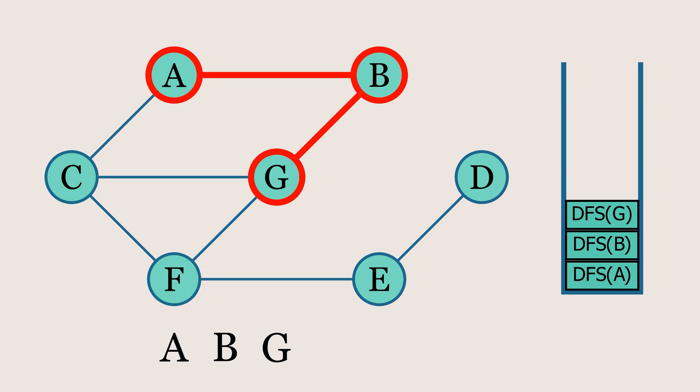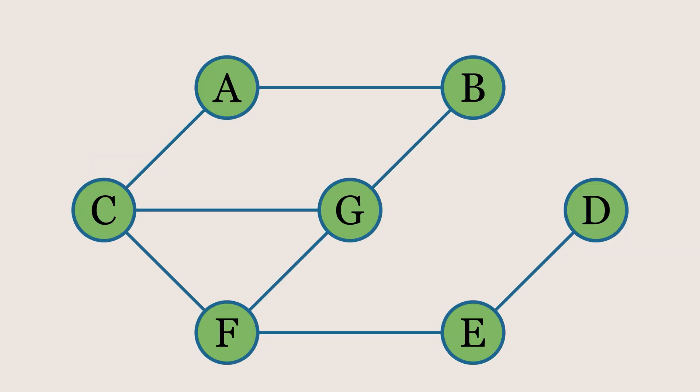Unlike depth-first search, which explores as deep as possible along each branch, breadth-first search doesn't dive deep right away. Instead, it traverses the graph layer by layer, exploring all neighbors at the current level before moving to the next.